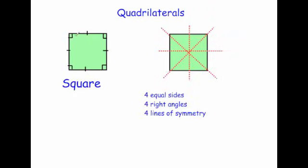A square has four equal sides, so each one of the sides is the same length. There are four right angles — four 90-degree angles — and also four lines of symmetry. So a square has four equal sides, four right angles, and four lines of symmetry.